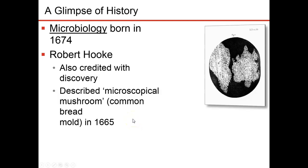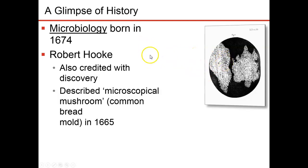Another individual credited with building the field of microbiology was Robert Hooke. He was one of the first individuals to produce a compound microscope. He was looking at cork under his microscope and noticed that cork has these little tiny structures — that's what he called them 'cells.' He called them cells because he lived in a monastery and the small rooms he lived in were called cells — a little tiny room with a bed and a desk and a chair.